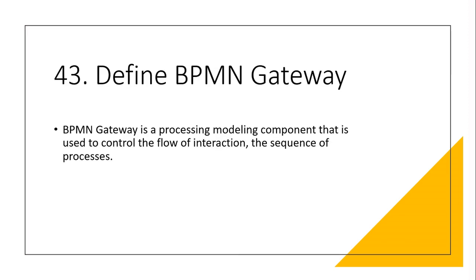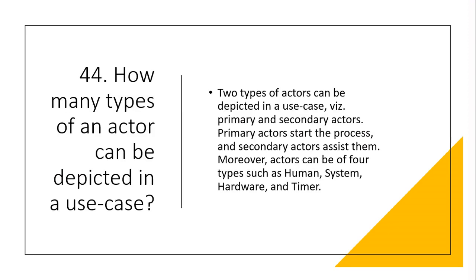Question 41: What are the different tools used in business analytics? MS Office, Blueprint, Python, QuickView, and Tableau. Question 42: What do you mean by critical path analysis? A critical path is the set of activities which includes the longest path in the whole project. A critical path analysis is a key component in reducing project timelines and controlling cost. Question 43: Define BPMN Gateway. A BPMN Gateway is a process modeling component used to control the flow of interaction and the sequence of processes. Question 44: How many types of actors can be depicted in a use case? Two types of actors — primary actors start the process and secondary actors assist them. Additionally, actors can be of four types: human, system, hardware, and timer.